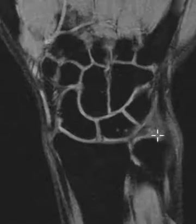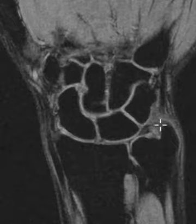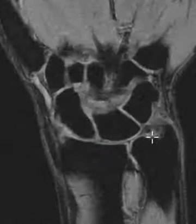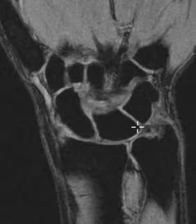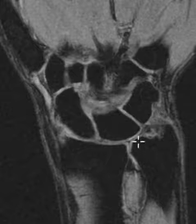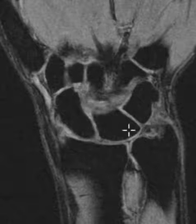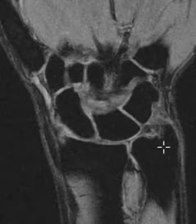The other components of the TFCC — this is the dorsal band here, the foveal attachment, the styloid attachment — everything looks good. Just marked thinning of that central disc, and there are no bony changes. Over time this can cause what we call ulnar abutment syndrome, or ulnar impaction, where the ulna hits the lunate and you get cystic changes and marrow edema in the base of the lunate here, but this patient does not have that yet.